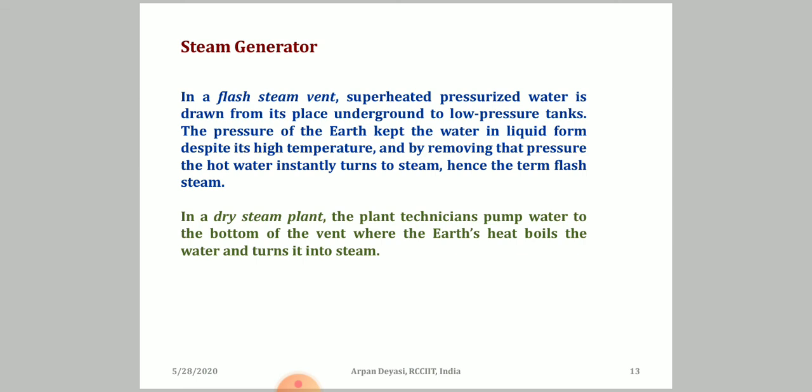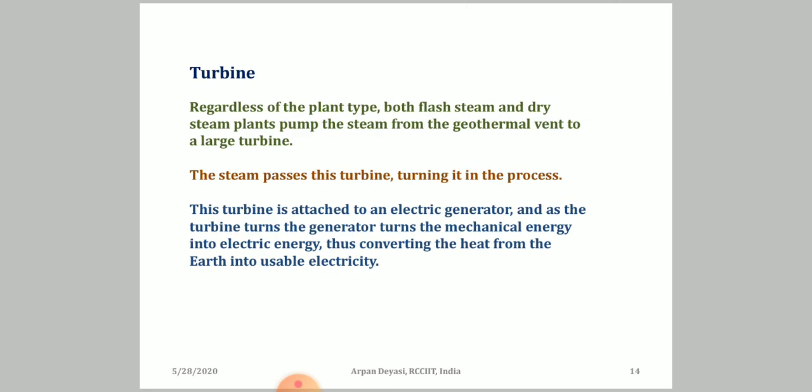In a dry steam plant, technicians pump water to the bottom of the vent where the Earth's heat boils the water and turns it into steam. The steam generator is required for hot, dry, and binary cycle plants — but for the binary cycle, steam is generated from the secondary liquid, not the primary liquid. The turbine is required for all cases: steam passes through the turbine, rotating it, and it is attached to an electric generator. As the turbine turns the generator, mechanical energy converts to electrical energy, giving us usable electricity.